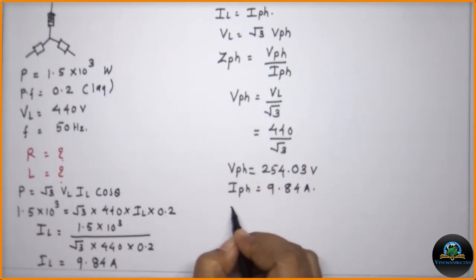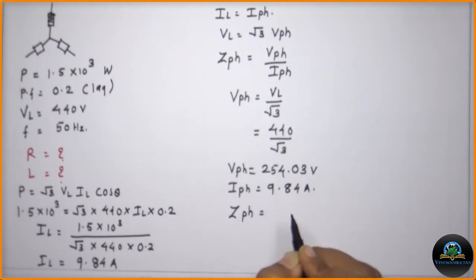Going back to the same equation, now I can easily calculate the value of ZPH, which is equal to VPH upon IPH, so 254.03 upon 9.84.